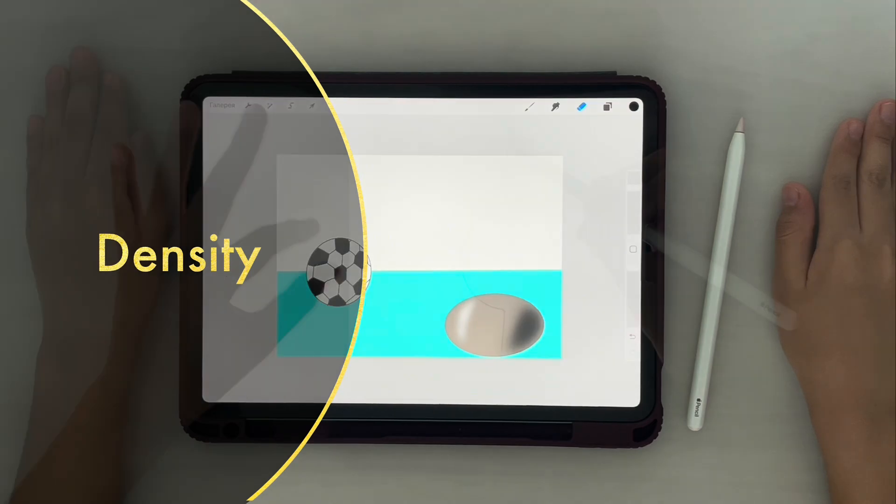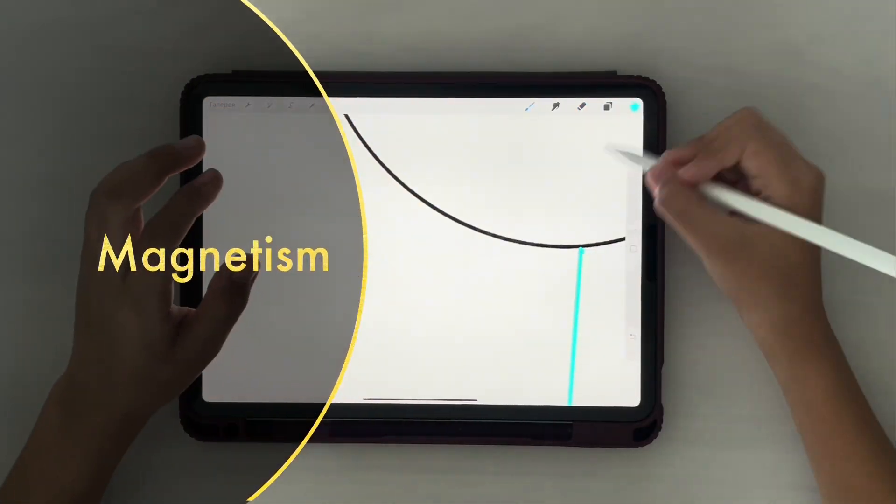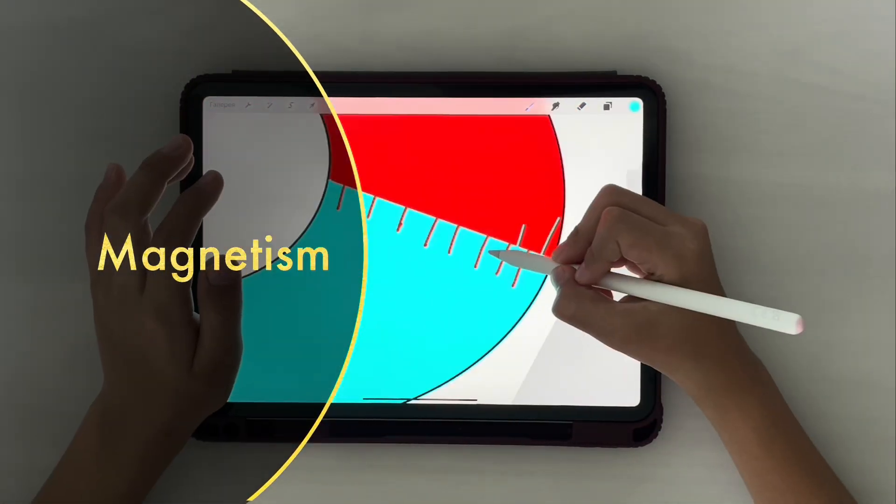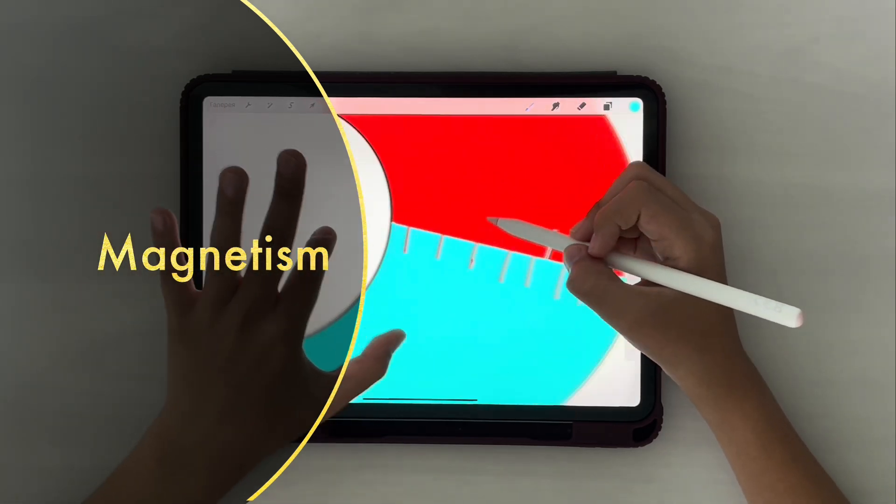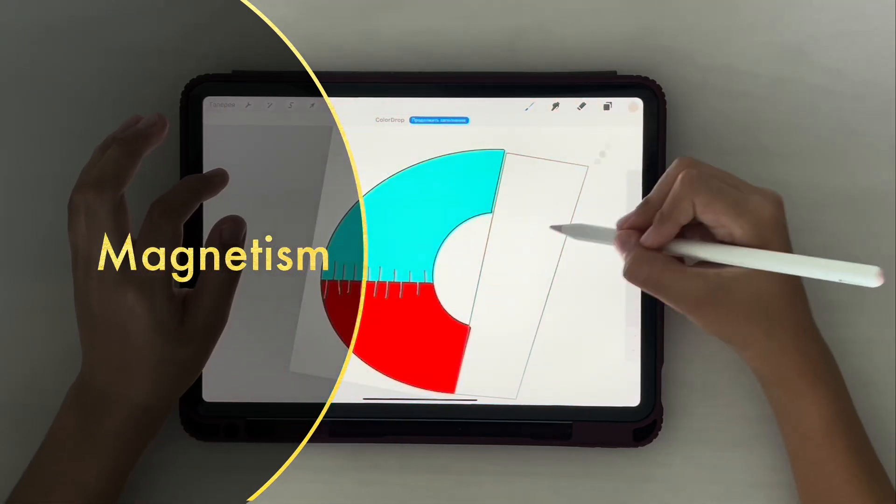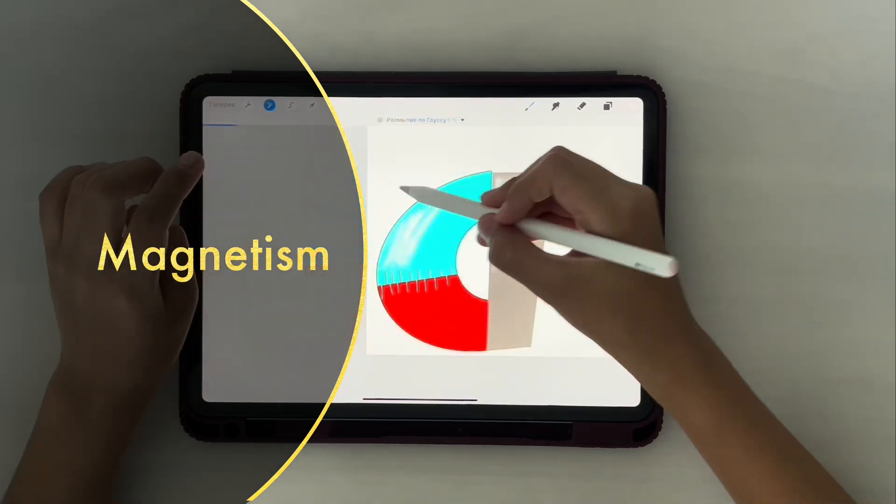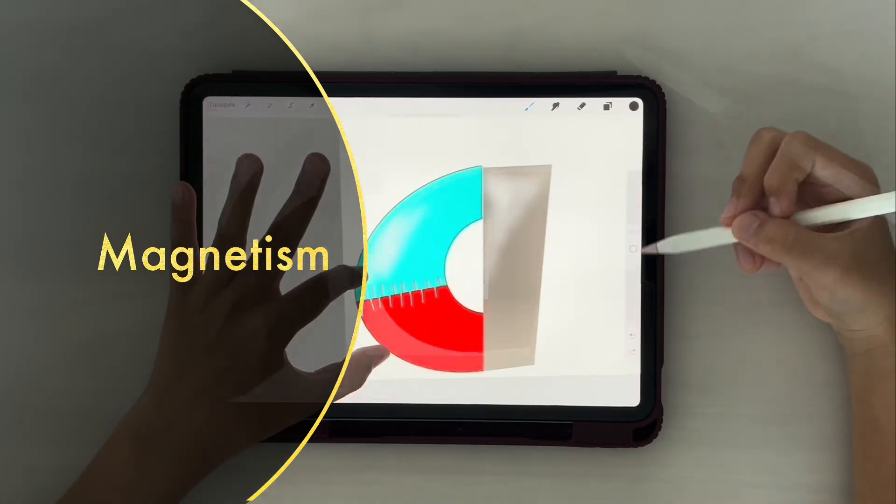A magnet can attract certain metals because of their magnetic field inside the magnet, which is created by the movement of small, invisible particles of certain metal alloy. Some metals will not be attracted, but be repelled by a magnet.